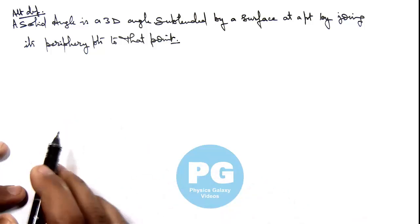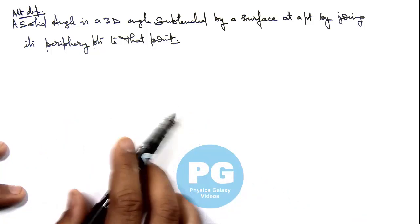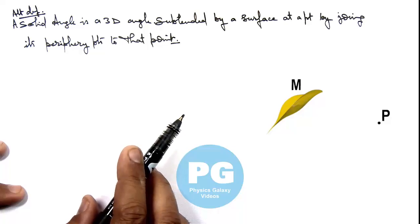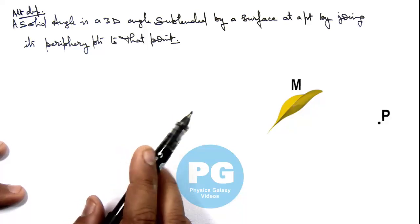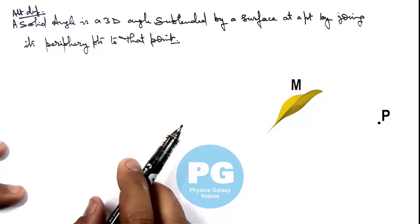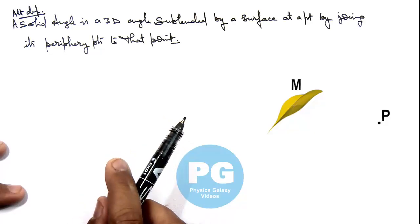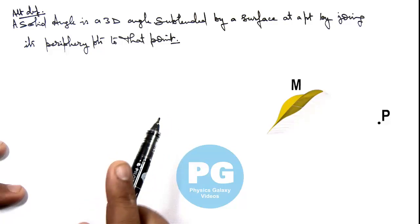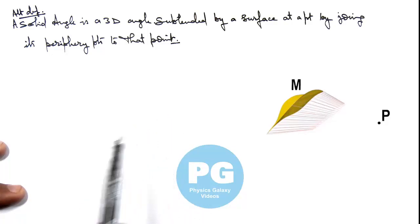You can see in this animation if this is a surface M and this is a point P, and we are willing to find out the 3 dimensional solid angle subtended by this surface at point P. Then you can see we can join all points of periphery to this point P, and by joining these points, you can see we are making an envelope or a cone type of surface.